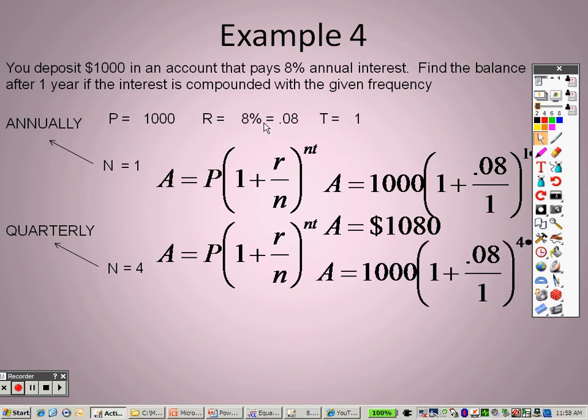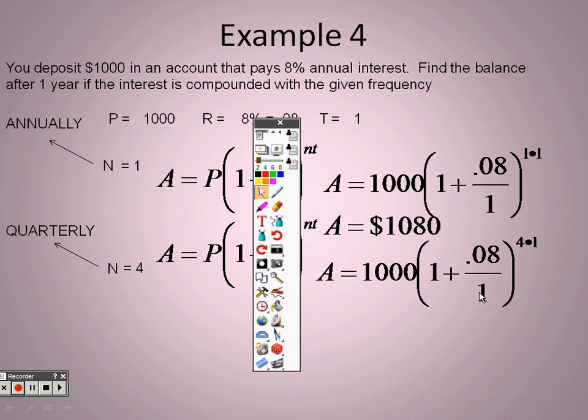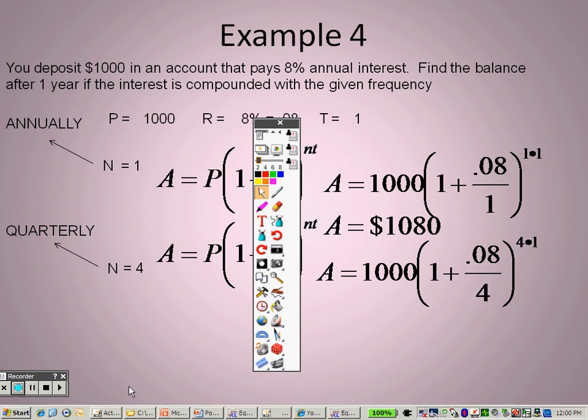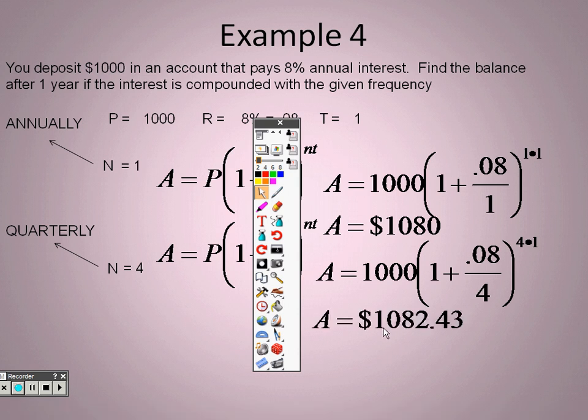So taking a look over here I need to plug in, as I said, it's as if you plugged a 4 in. So I plugged a 4 in for n, and when I do that you end up getting $1082.43 for your answer.